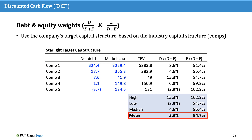Just as we might do with a public company, we use a target capital structure based on comparable companies instead of our private company's capital structure. Based on the comps we have, we take an average or median debt to capitalization and equity to capitalization ratio and use those as the industry and our target capital structure.